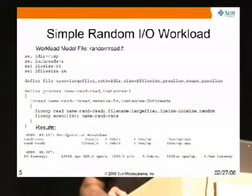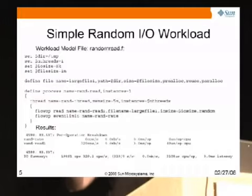Their behavior can be customized by attributes which are assigned to them. Here's an example of a very simple random I/O workload. Notice at the top we also have variables which you can set to default values within the workload file, but you can also change them on the fly using the command console. You see a simple one with a single file, a process, and a thread, and this one is doing a simple operation on the file: a random read.